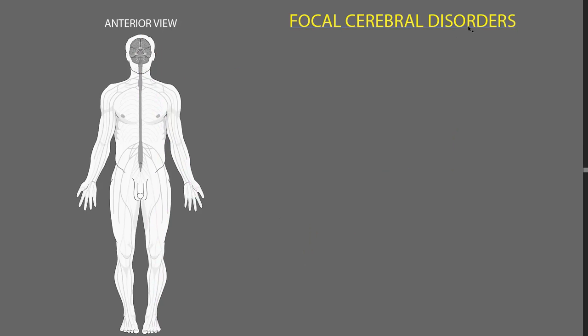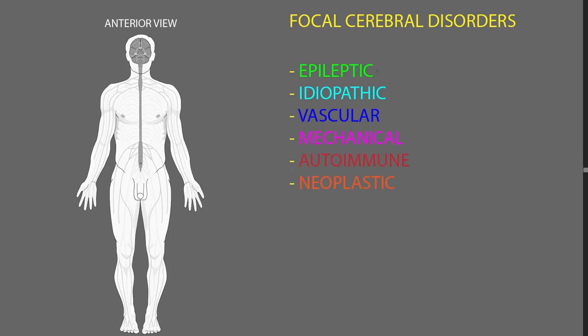Now, many types of pathology may cause focal abnormalities of the brain. Let me list a few of the big categories. First, the category of epileptic disorders, because these are a common cause of focal cerebral syndromes — in particular involving the cerebral cortex, that outermost layer of the cerebrum. Seizures are episodes of abnormal electrical activity that may start in just one focal area of the cerebral cortex.